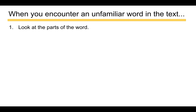The first thing I would always encourage you to do is look at the parts of the word. A word can be made up of smaller parts known as roots, and you might have had a teacher that talked about prefixes and suffixes. Those roots can give you clues about the meaning of the word. For example, you might have learned that 'bi' means two — like bicycle, which has two wheels.